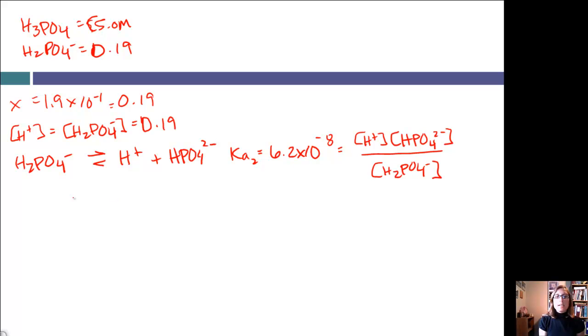We already know H2PO4 and H+, so we can say 6.2 times 10 to the negative 8 equals our H+, which is 0.19, times HPO4-2, which is what we're solving for, divided by H2PO4 which is 0.19. Basically these will end up canceling. So we get the concentration of HPO4-2 is equal to 6.2 times 10 to the negative 8.